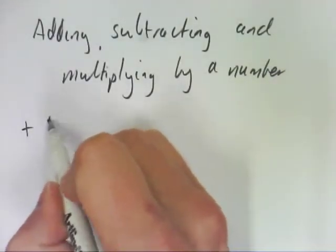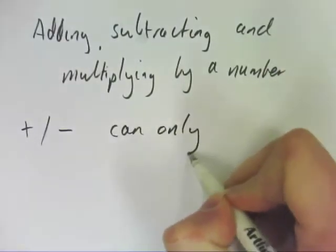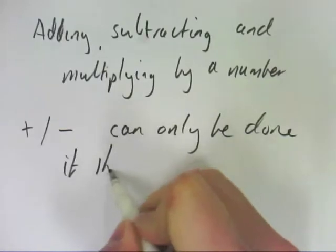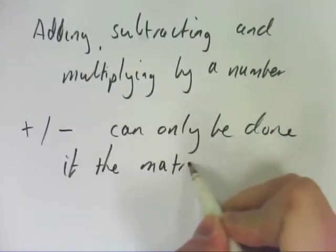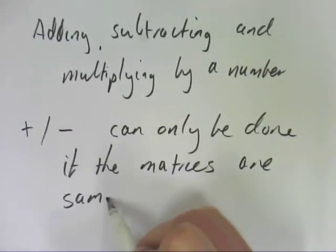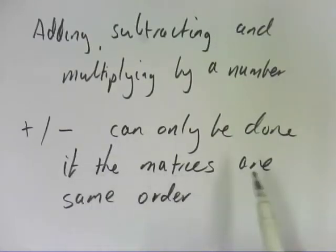When it comes to adding and subtracting, it can only be done if the matrices you're working with are the same order. That is, they're the same shape, same size. So they're both 2 by 2, or they're both 3 by 3, or 2 by 3, or whatever they are. So it can only be done if the matrices are of the same order.